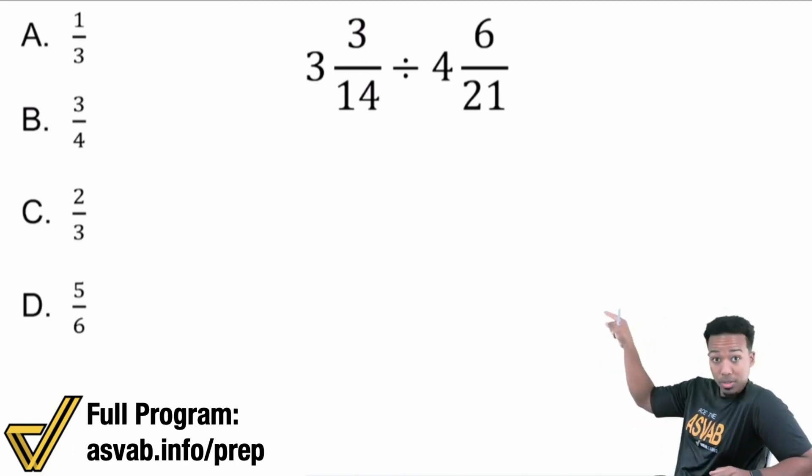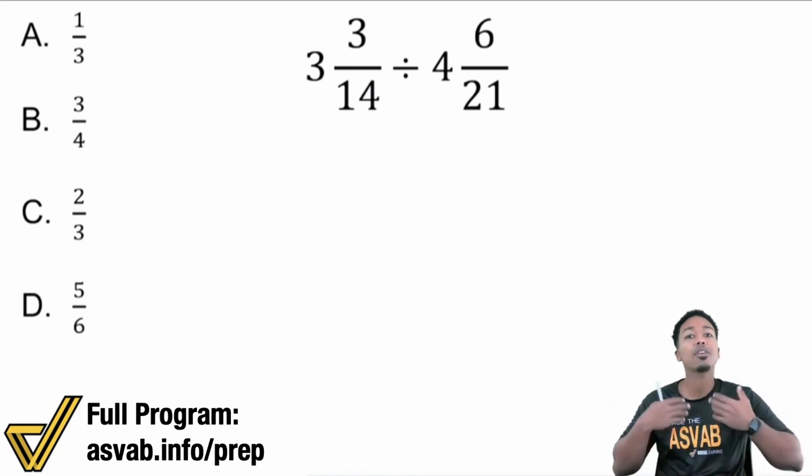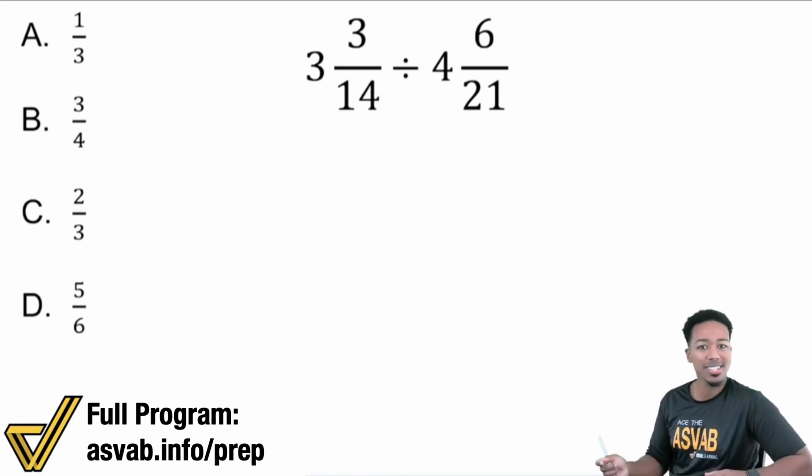Turn those mixed numbers into improper fractions, then perform the rule for dividing fractions, and then simplify wherever you can. Follow that plan and you're going to be nice, calm, cool, and collected, and you're going to get the right answer. Let's go.